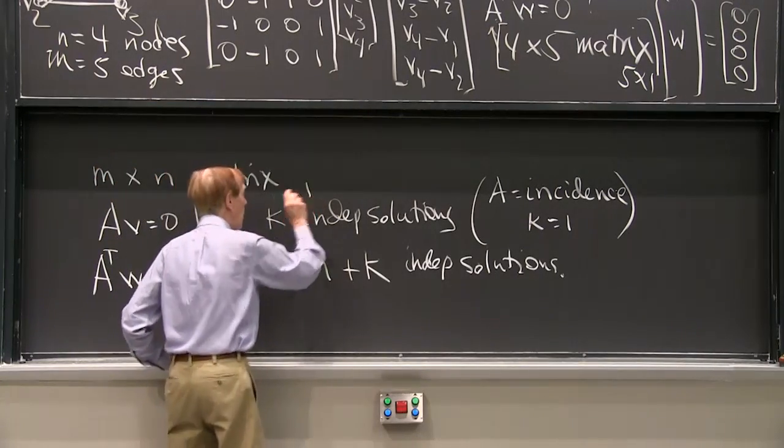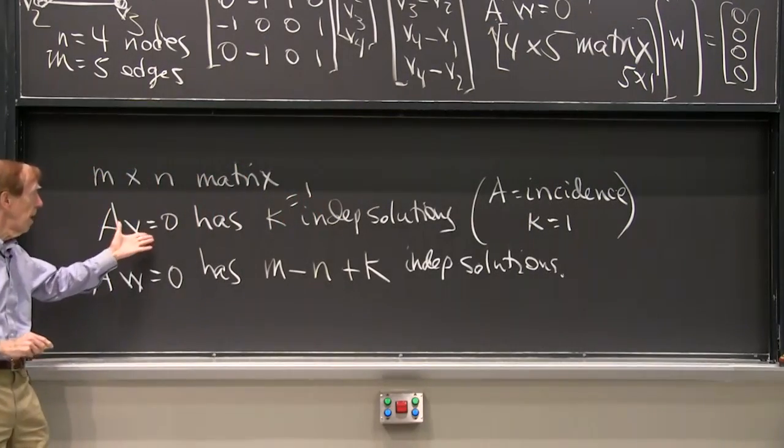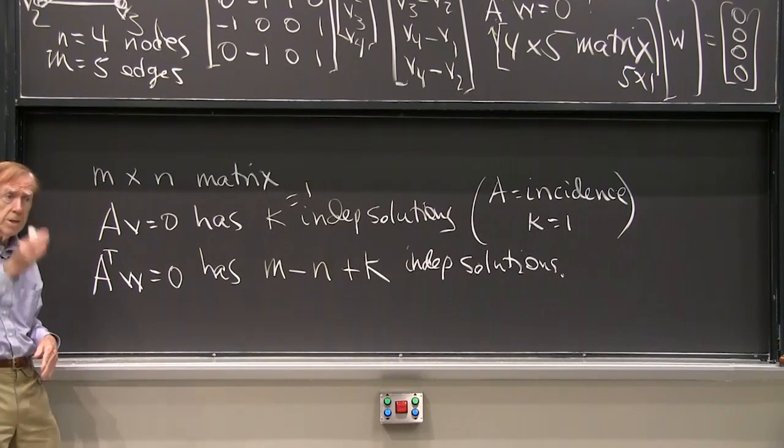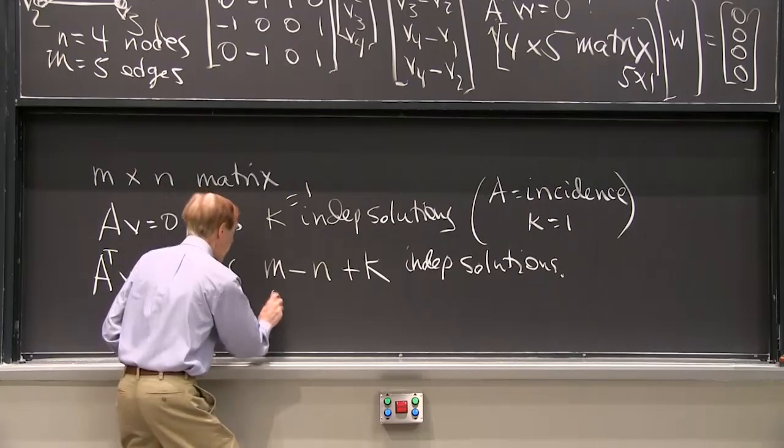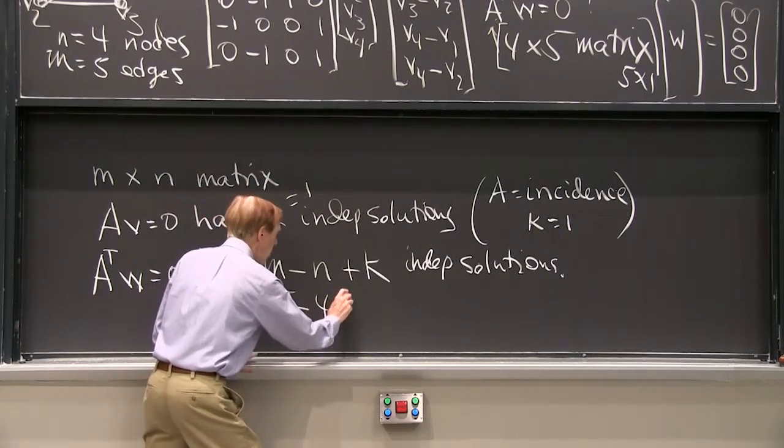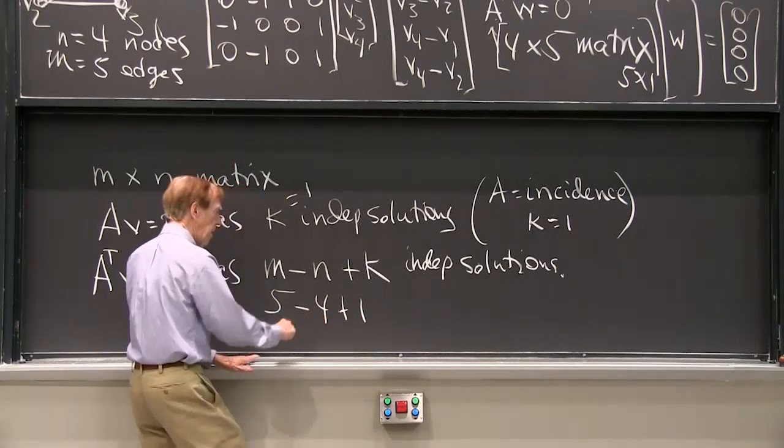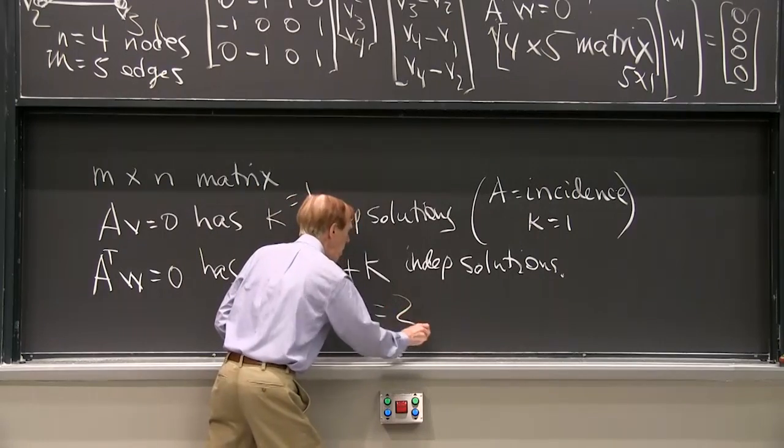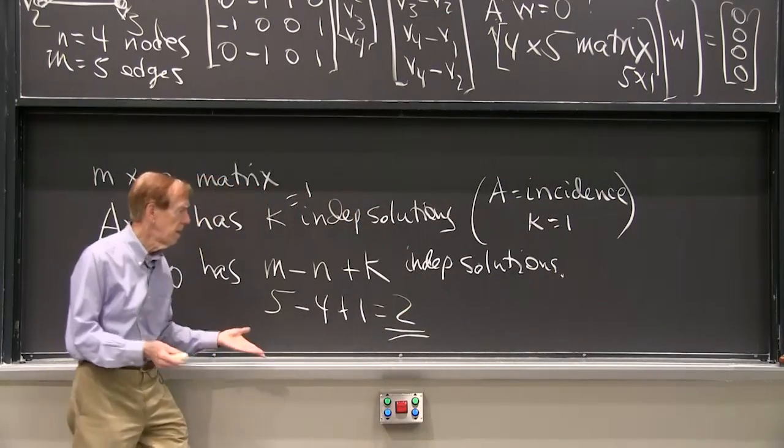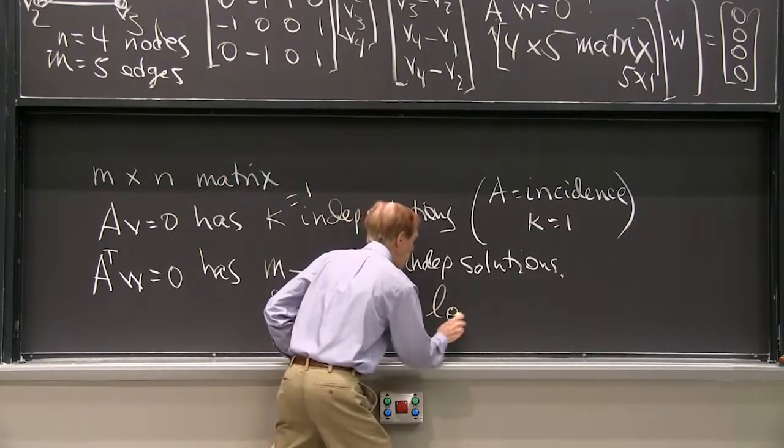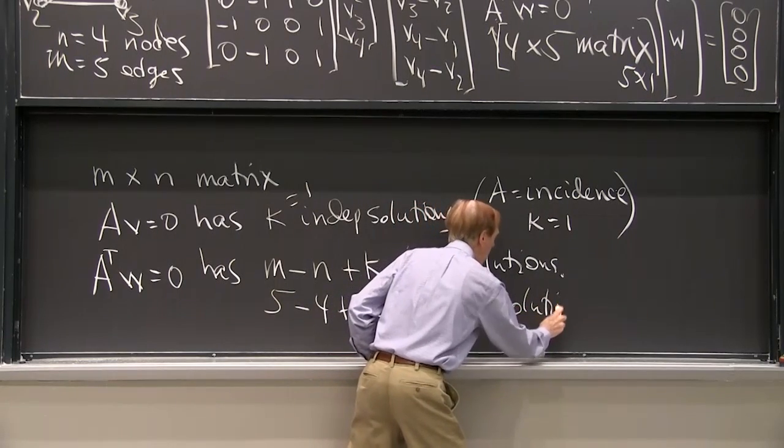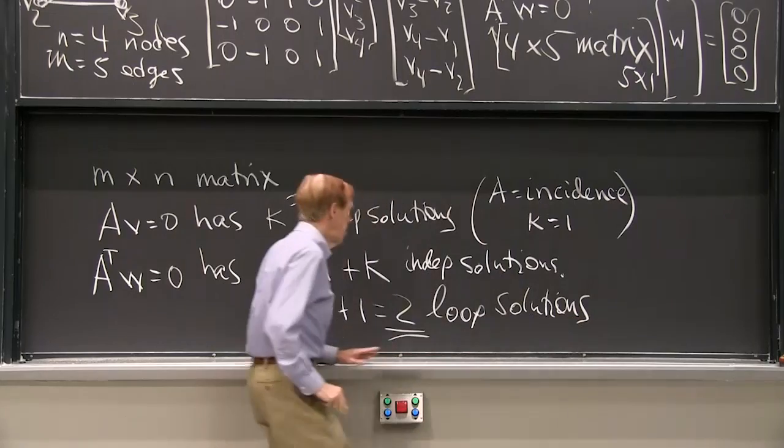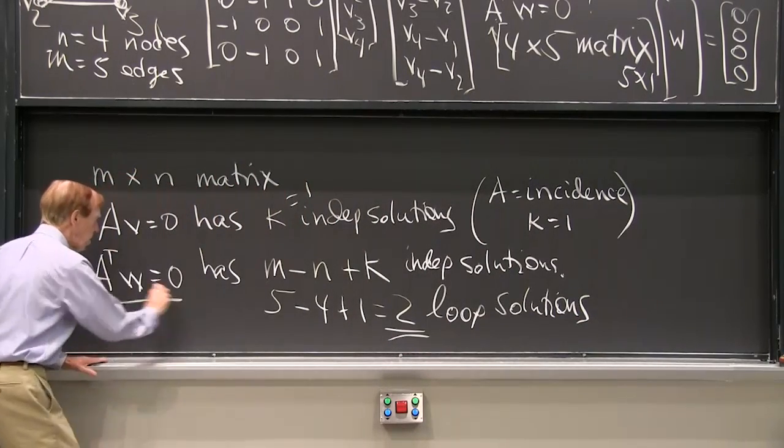And let's just check that this counting theorem was correct. This was K equal 1, right? The only solution to Av equals 0 was the constants 1, 1, 1, 1. Then m was 5, n was 4, K was 1. 5 minus 4 plus 1 is 2. And that's the number of loops, loop solutions, to Kirchhoff's current law.